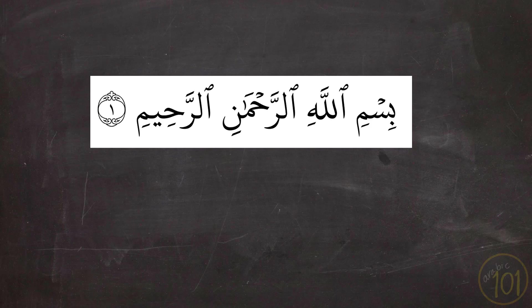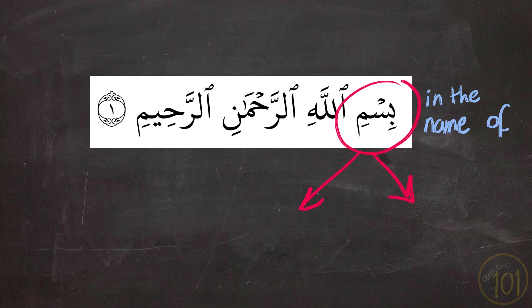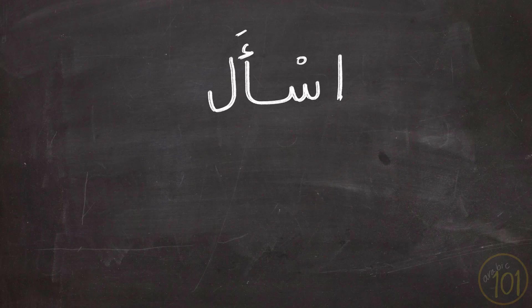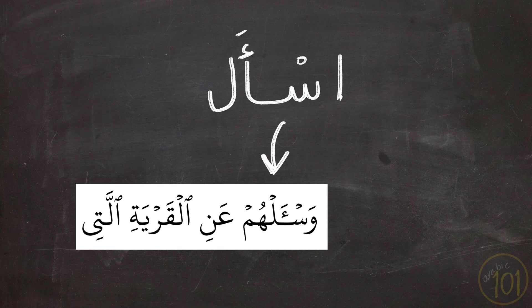Like in the famous example of 'Bismillahirrahmanirrahim' — the first part is actually two words meaning 'in the name of.' Originally it was written as 'bi' (meaning 'with' or 'in') followed by the word 'ism' (meaning 'name'), so 'bism' means 'in the name of.' But because it is always dropped in this position, it has kind of disappeared. Similarly, the verb 'isal' — the imperative form of 'ask' — originally starts with Hamzat Wasl, but in the Holy Quran it is dropped.